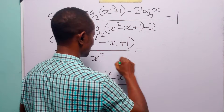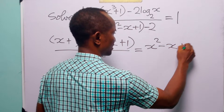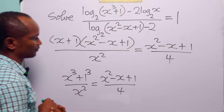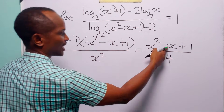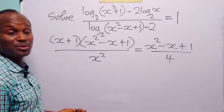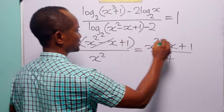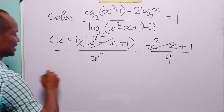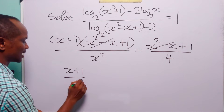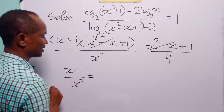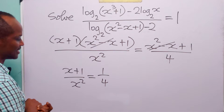This is still equal to x squared minus x plus 1 divided by 4. Now that we have the same factor on both sides, we can divide both sides by this expression. This is going to cancel that factor, leaving us with x plus 1 over x squared on the left-hand side and 1 over 4 on the right-hand side.